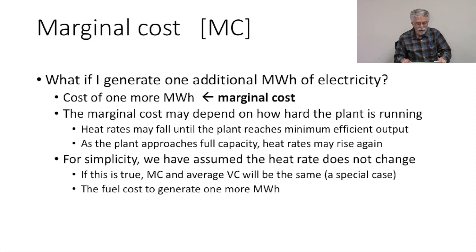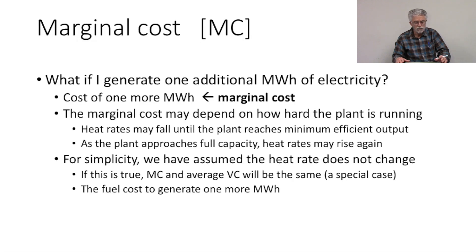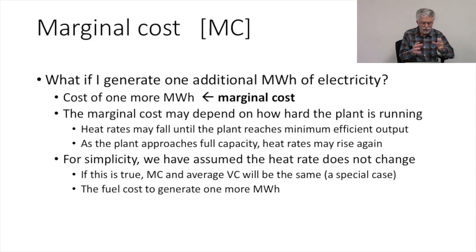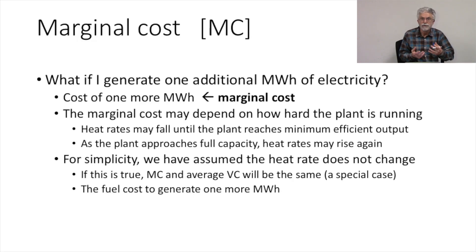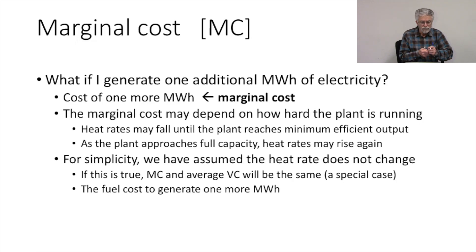Next, we get to the measure of cost that is every economist's favorite measure of cost, and that is marginal cost. Marginal cost is a measure of how costs change as we change the capacity factor of the power plant. The question we want to start with is: how do my costs change if I generate one additional megawatt hour of electricity? And this is our definition of marginal cost — at any capacity factor, we ask ourselves what would the cost be if I decided to generate one more megawatt hour.